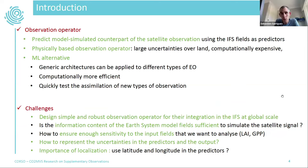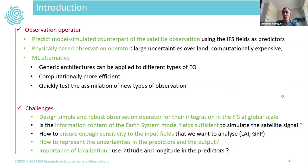A key component of data assimilation is the observation operator — a model, which can be physical or statistical, that predicts the model-simulated counterpart of the satellite observation using earth system model variables as predictors. We have been using physically-based observation operators, but these models can be quite complex and are associated with large uncertainties. Machine learning offers a great alternative because these models are computationally more efficient and quite generic — the same methodology can be applied to different types of observations.